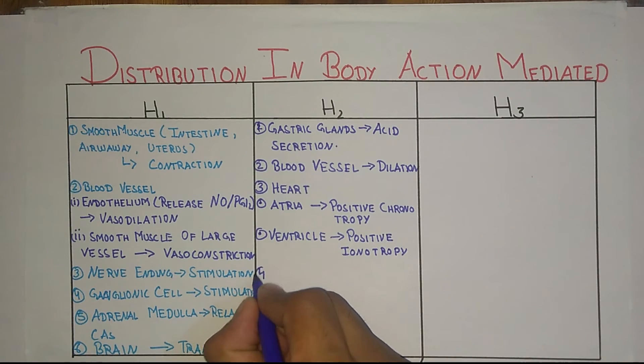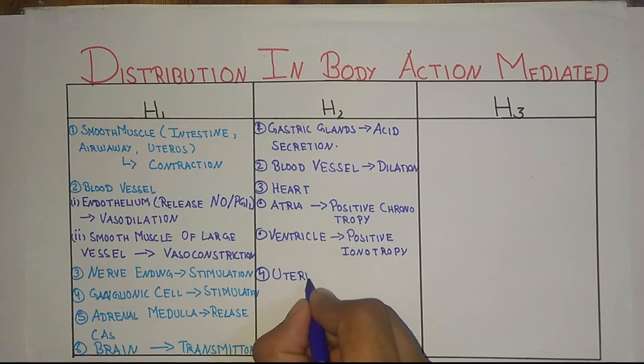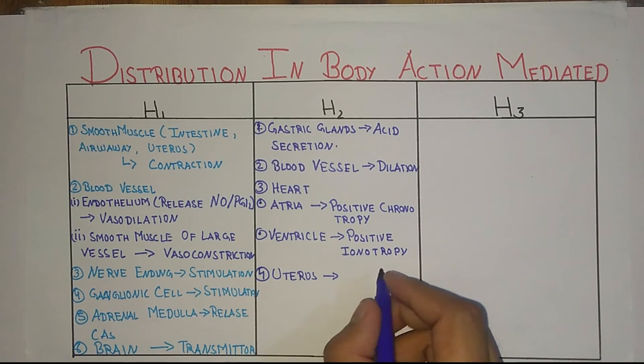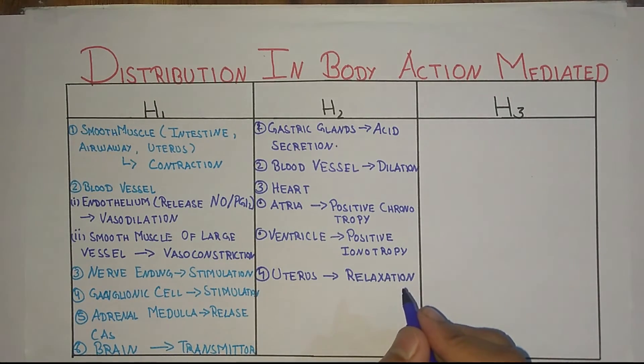Next, H2 is present in uterus where there is relaxation. Fifth is brain where it acts as a transmitter.